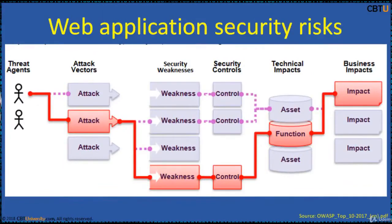This picture is about web application security risks. Attackers can follow different paths through your application to do harm to your business or organization. Each of these paths represents a risk that may or may not be serious enough to warrant attention. The elements include threat agents, attack vectors, security weaknesses they exploit, security controls, the break-in, and the impact — which can be technical or business-related.